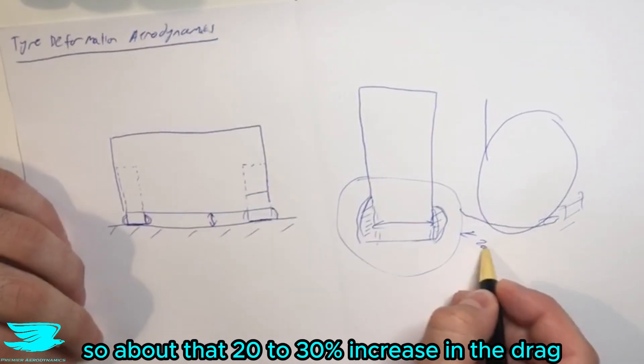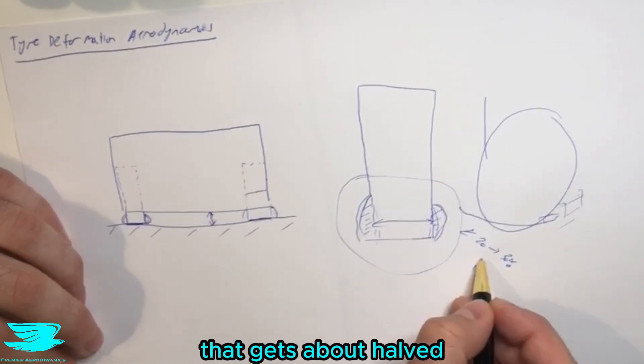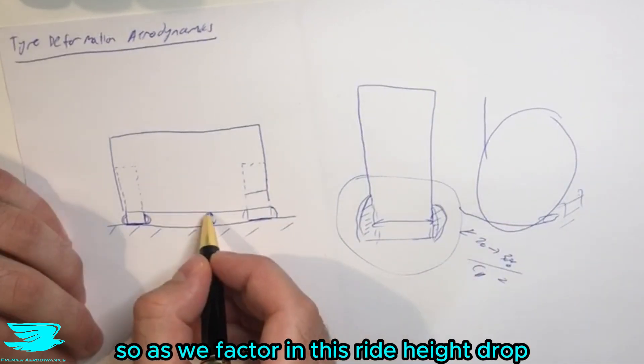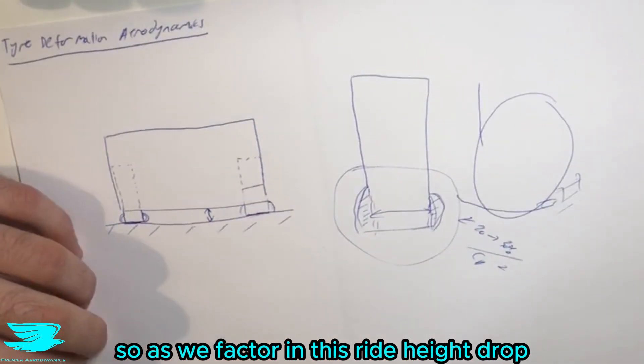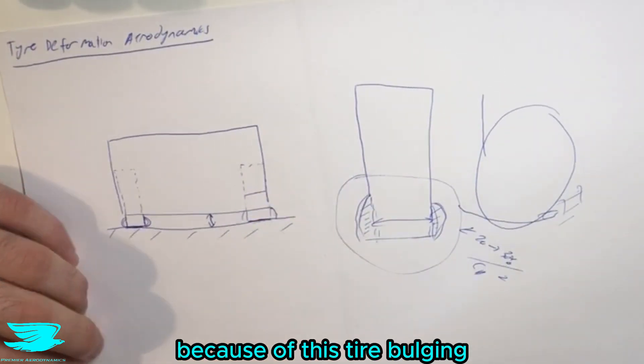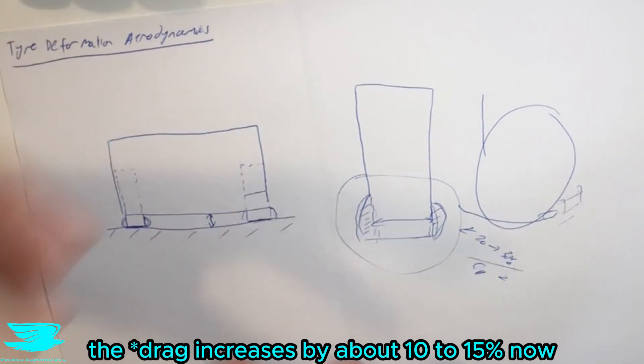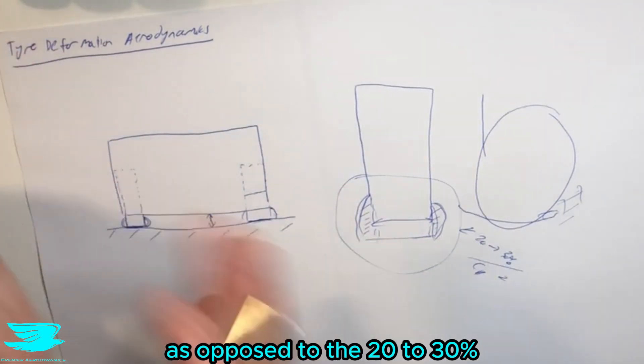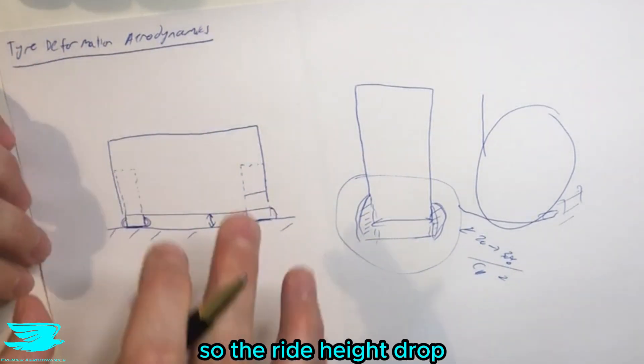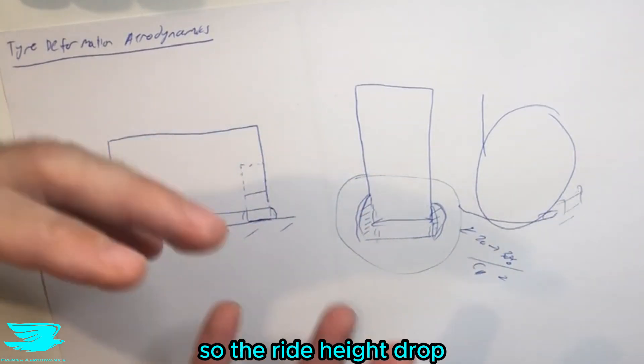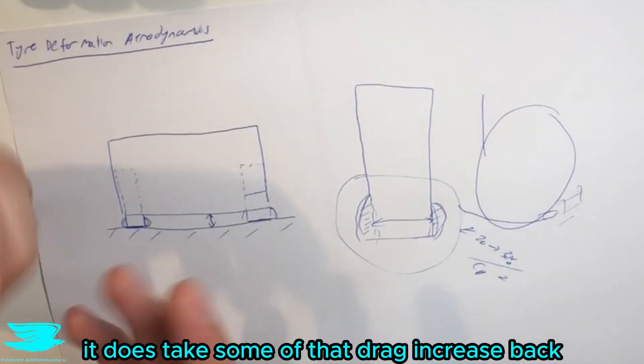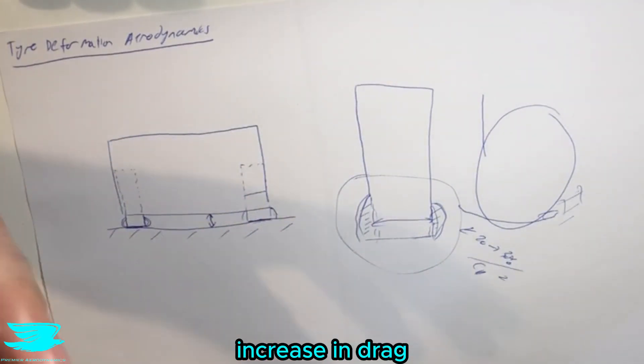So about that 20 to 30 percent increase in the drag, that gets about halved. So as we factor in this ride height drop because of this tire bulging, the drag coefficient increases by about 10 to 15 percent now, as opposed to the 20 to 30 percent. So the ride height drop does take some of that drag increase back, which is nice, but still we do get an increase in drag.